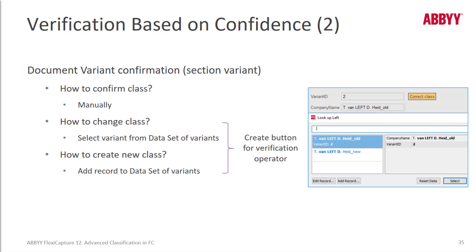To change a variant or create a new one, the verification operator needs access to the dataset of variants, and this can be done via a button.